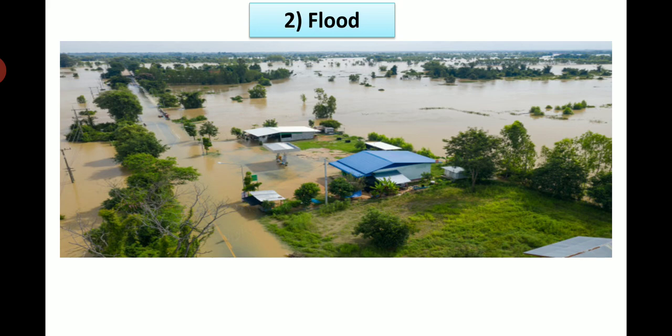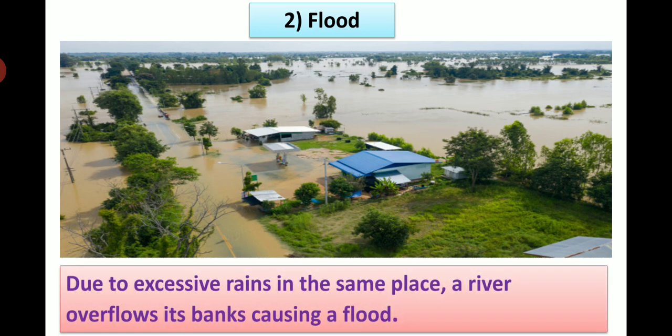Next disaster is flood. We can see flood in this picture. The water has entered human settlements. Due to excessive rains in the same place, a river overflows its banks causing a flood.